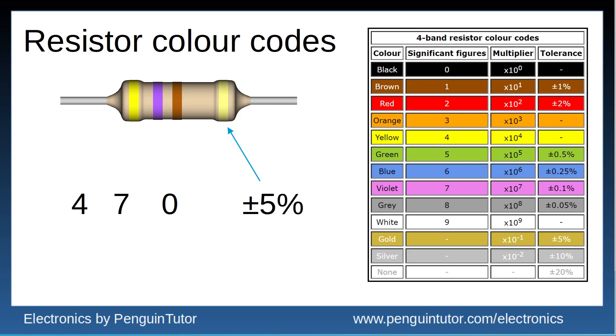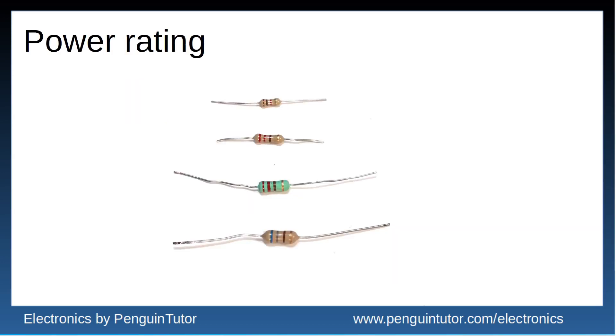Each resistor will also have a power rating. It's not normally indicated on the resistor itself but you can normally get an idea by looking at the size. The quarter watt resistors tend to be the smallest through hole resistors, and then one watt are quite large, and then the half watt which is a common size fits somewhere in between the two.